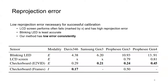We calibrate all four sensors using the blinking LED pattern, LCD screen, and checkerboard methods, and compare the root mean square reprojection error. Our proposed method has a consistently low RMSE. Only the Davis frames report a lower reprojection error overall. Compared to our method, the LCD screen RMSE is at least two times higher or even fails. The blinking LED calibration pattern is the least accurate in our experiments.